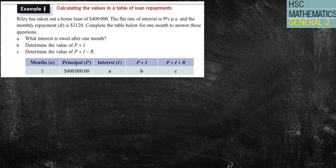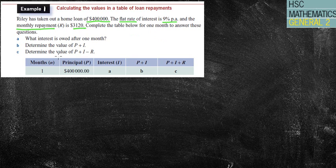Riley has taken out a loan of $400,000. The flat rate — so that's how much the loan is worth — is called flat rate, meaning it's simple interest. We've got 9% per annum, and the monthly repayment is $3,120. Complete the table below for one month to answer these questions. So we've got the table and it's basically asking us to complete it in order to answer A, B, and C.